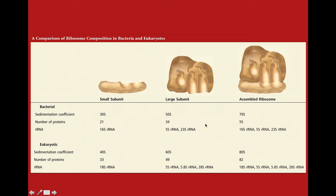In the large ribosomal subunit, we actually have an extra ribosomal RNA, and again the number of proteins is increased in eukaryotes, as is the size of the largest ribosomal RNA — 23S in bacteria and 28S in eukaryotes. Remember that the assembled ribosomes have a different sedimentation coefficient that's different from the sum of these two, because sedimentation is a measure of how quickly a molecule will migrate through a gradient based on its shape, its mass, and its size.